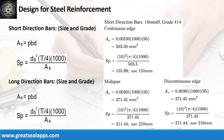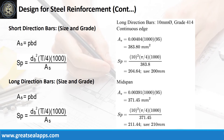At short direction, given mid-span and discontinuous edge ρ equals 0.00391; B equals 1,000 mm; and D equals 95 mm. The area of steel for both sections is 371.45 mm², and the spacing for 10 mm bar is 210 mm. At long direction, given continuous edge ρ equals 0.00404; B equals 1,000 mm; D equals 95 mm; area of steel is 383.8 mm²; spacing is 200 mm. Given mid-span ρ equals 0.00391; area of steel is 371.45 mm²; spacing is 210 mm.